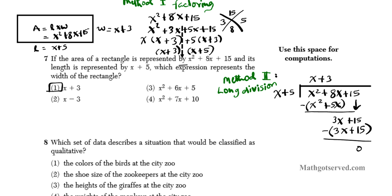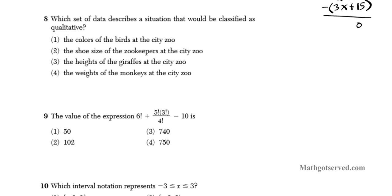Let's move on to question number 8. Question 8 says which set of data describes the situation that will be classified as qualitative? So qualitative basically refers to a description of properties, like the properties of objects in a set. Qualitative basically is a non-numerical type of description. So if you think about quality, you think about non-numerical descriptors.